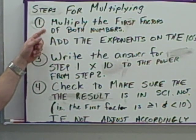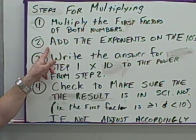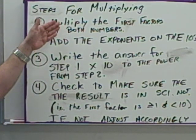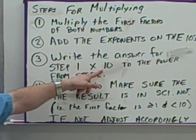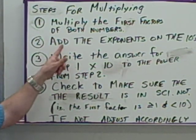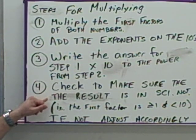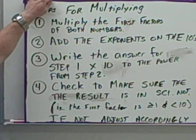Just to recap here. Steps for multiplying. Multiply the first factors of both numbers. Add the exponents of the 10s. Write the answer for step 1, the product of the first factors, times 10, you've got to write that times 10, to the power from step 2, the result, the sum of the exponents. Then check to make sure the result is in scientific notation. Make sure that front number is between 1 and 10. It can be equal to 1, it cannot be equal to 10, somewhere between 1 and 10. If not, adjust it accordingly.